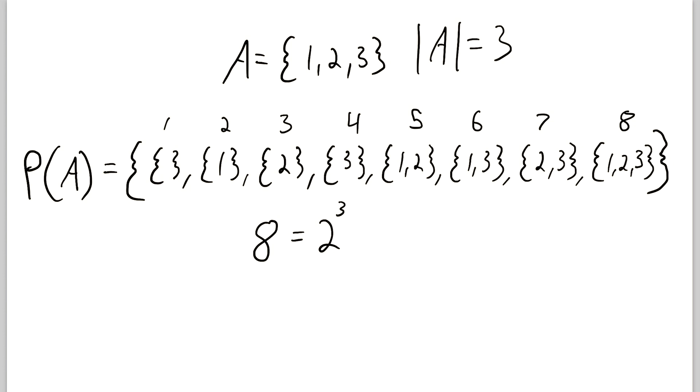And this is not a coincidence. This is the general rule. So if the cardinality of a set A is equal to n, which means there are n elements in the set A, then the cardinality of the power set of A is equal to 2 to the power of n. Pretty snazzy.